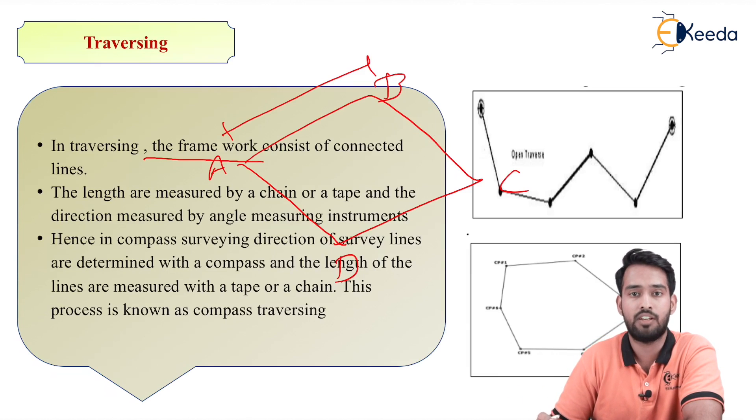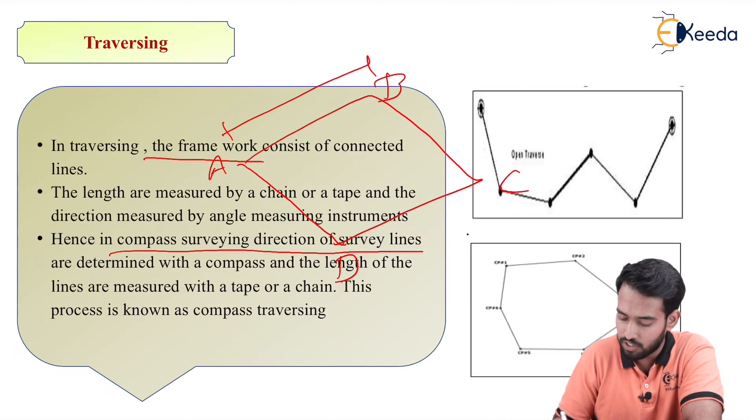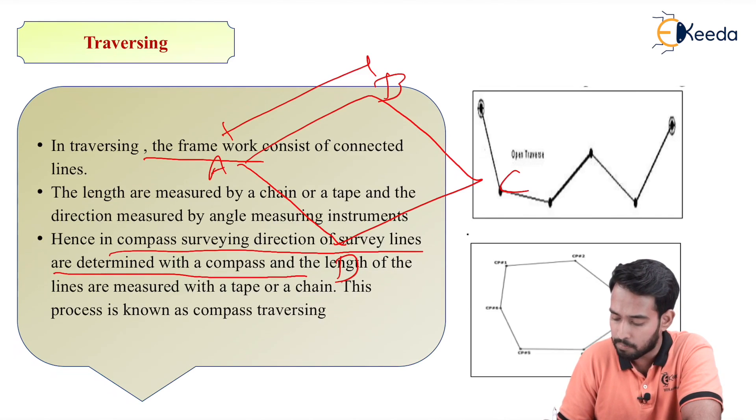Hence in compass surveying, direction of survey lines are determined with compass and the length of the lines are measured with chain or tape.